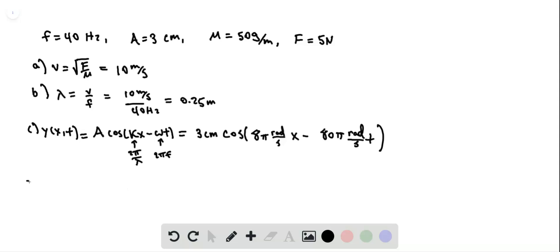And then finally, well, not finally yet, but for part D, we're asked to find the maximum transverse acceleration. And the transverse velocity is going to be the time derivative of y(x,t), which is going to be omega a sine of kx minus omega t. And then the transverse acceleration is going to be the derivative of the velocity, which is going to be minus omega squared a times cos of kx minus omega t.